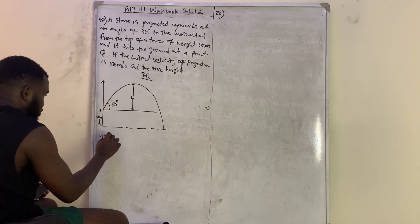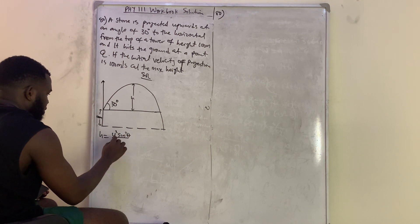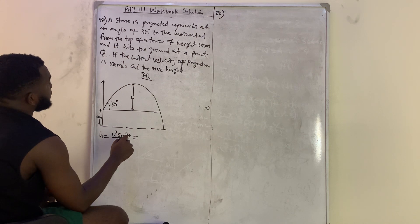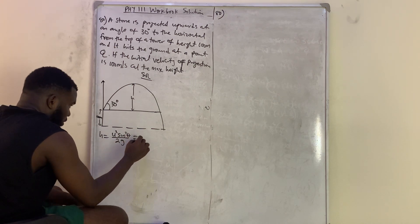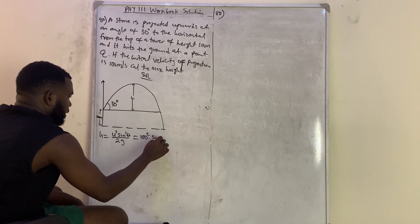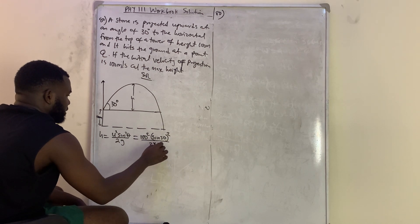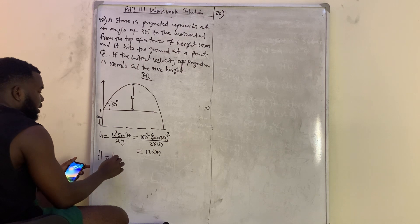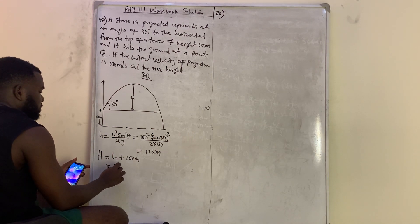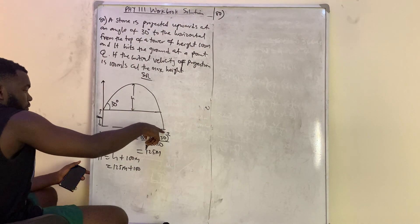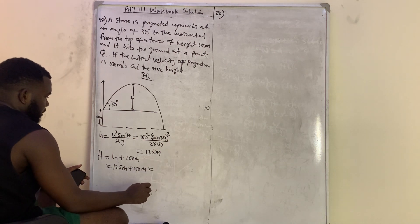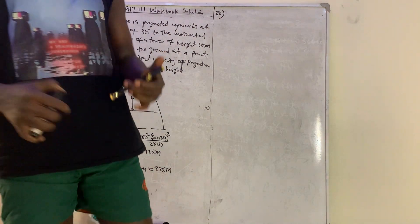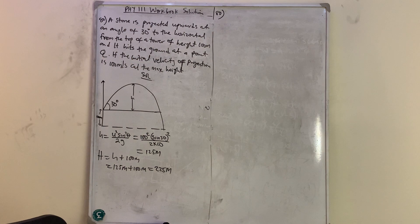Using the formula: h = u² sin²θ / 2g, with u = 100 m/s, θ = 30°, g = 10 m/s². This gives h = 100² × sin²30° / (2 × 10) = 125 meters. The total maximum height from the ground is 125 plus the tower height of 100 meters, giving 225 meters. Thank you for watching — please like, share, subscribe, and comment the answer to the question I skipped.